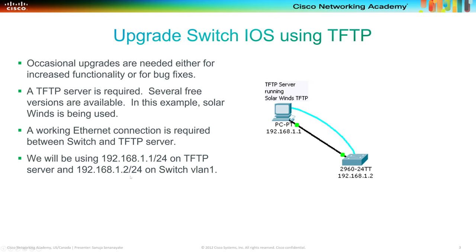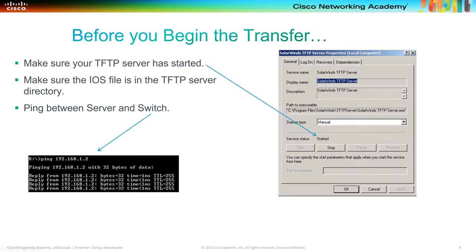In this example, we will be using 192.168.1.1/24 on the TFTP server and 192.168.1.2/24 on the switch VLAN 1, because VLAN 1 is the one we're going to use for the upgrade process. Before you begin the transfer, make sure your TFTP server has started and the IOS file is in the TFTP server directory. You should always ping between the server and the switch to confirm connectivity.